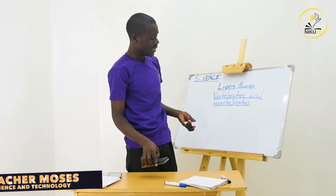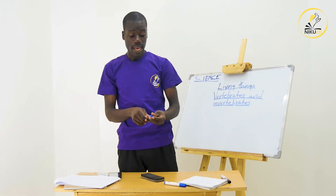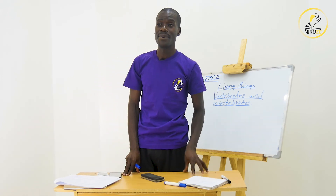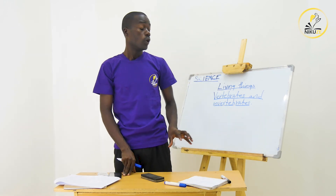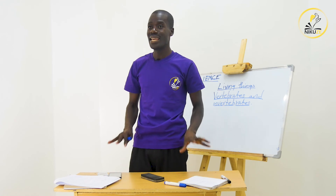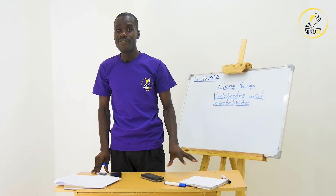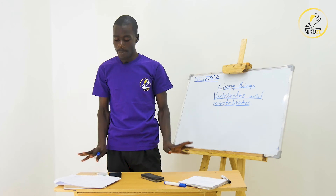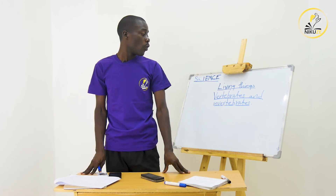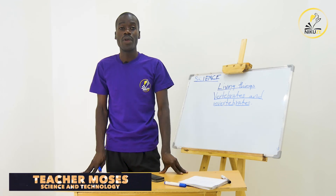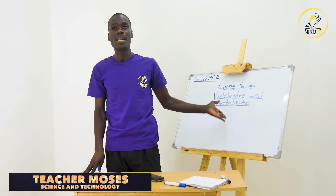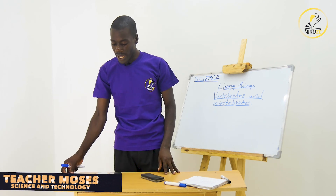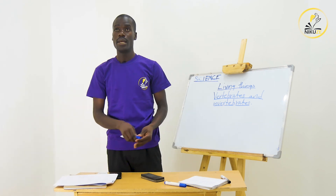You will be asked to classify animals — you will be given a list and told to group them. Today we have looked at vertebrates and invertebrates. The key thing is to identify and define vertebrates and invertebrates. The examiner will write a list and it is your work to group them. I think from there we have concluded our fourth lesson. Thank you.